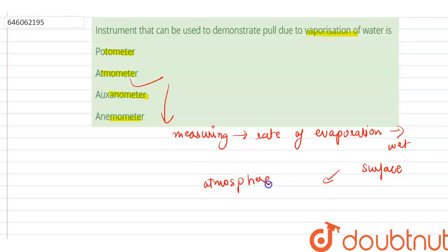So the correct option is atmometer. Photometer is a device that is usually used for measuring the rate of water uptake of a leafy plant shoot, and xanometer is an apparatus for measuring the increase or rate of growth in plants.